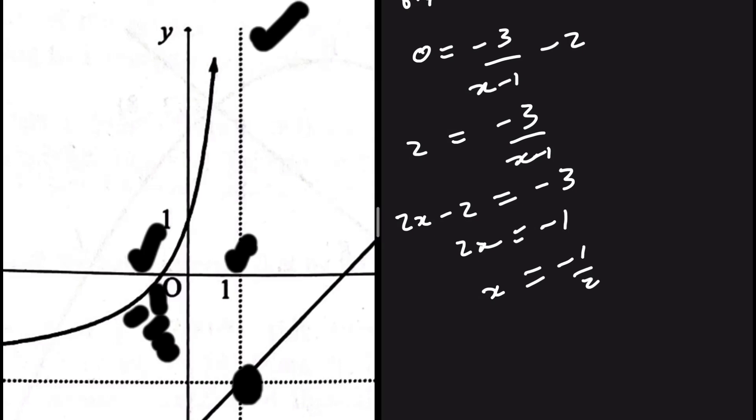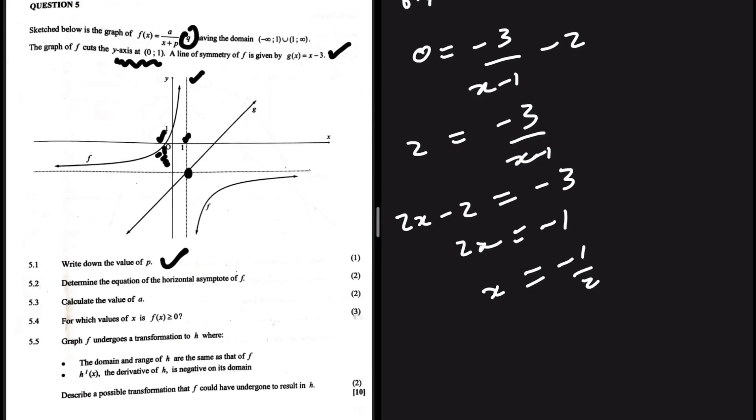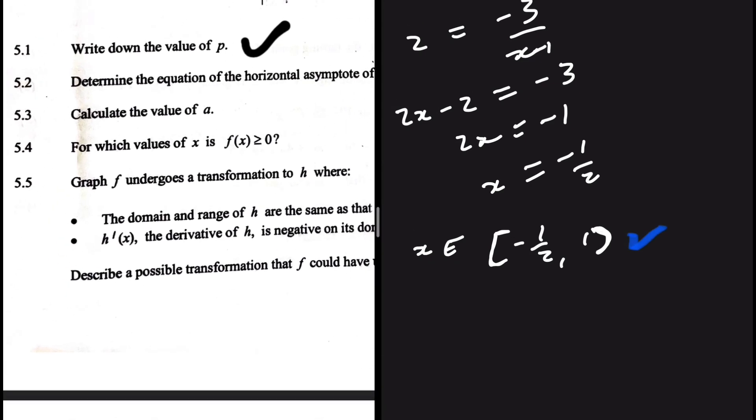So from x = -1/2 up to x approaching 1, f(x) is greater than or equal to zero. We can include -1/2 (since f(x) = 0 there), but we cannot include x = 1 because f is undefined there. The answer is -1/2 ≤ x < 1.